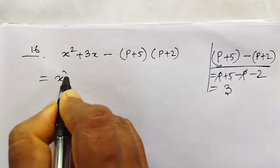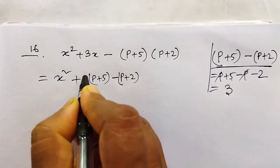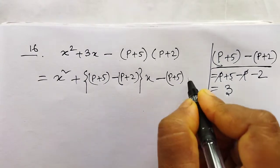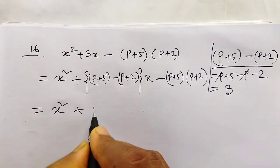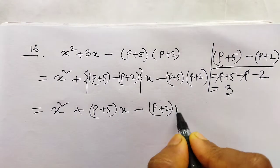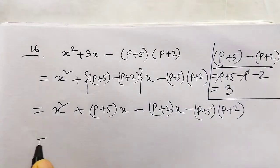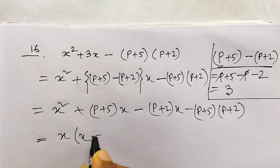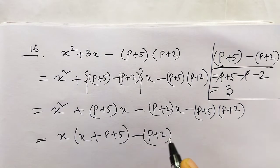sqrt x: x squared plus p plus 5 minus p plus 2 into ax minus x squared plus p plus 5 into p plus 2. x squared plus x to x minus p plus 2 into x minus p plus 5 into p plus 2. So here x is common, taking x common we get x plus p plus 5. In the second part, p plus 2 is common, so minus p plus 2 common gives us x plus p plus 5.